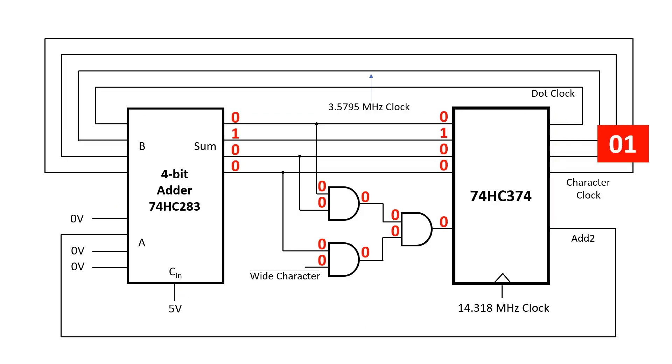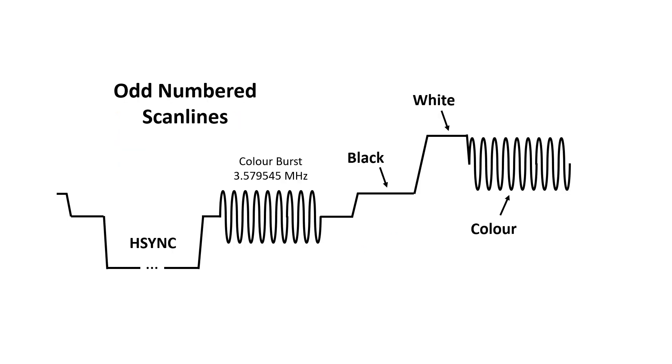Now let's have a look at the count when wide character is low. We count up as normal, but then when we get to 13, wide character will be low, which means that the add 2 signal will be low. So instead of adding 3, we add 1, and we count through 14 and 15. When wide character is low, we add 2 extra counts, which is what we need to keep the color burst in phase between scan lines.